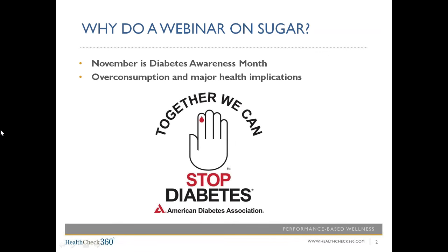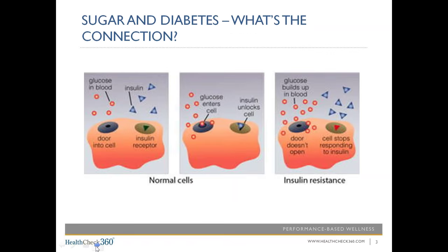More on that connection on our next slide. Diabetes is also a huge problem in our country today. The CDC predicts that one in three people will be diabetic by 2050. There are several different types of diabetes, but for the sake of our webinar today, we'll be referring specifically to type 2 diabetes, which is by far the most common type and is not only preventable, but can even be reversed.